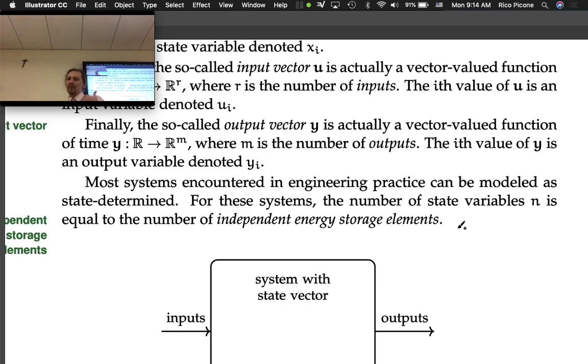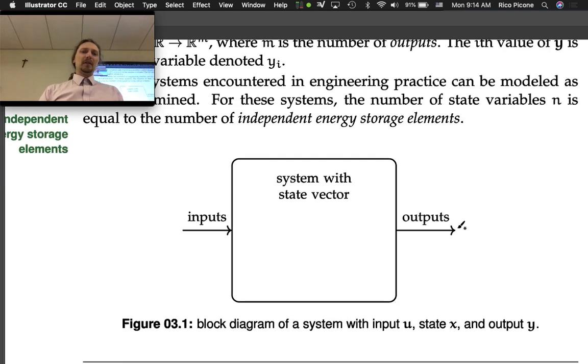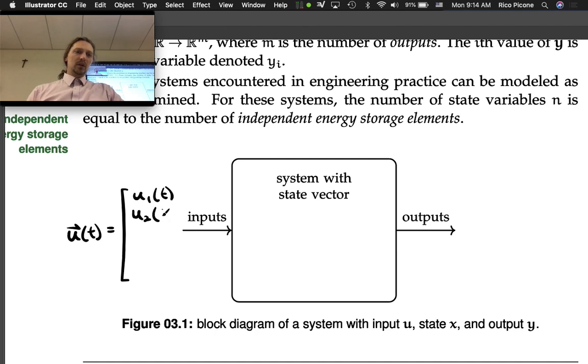Let's remember this block diagram. We have our input vector-valued function of time u(t), which we define as column vectors: u_1(t), u_2(t), all the way down to u_r(t). There are r inputs.